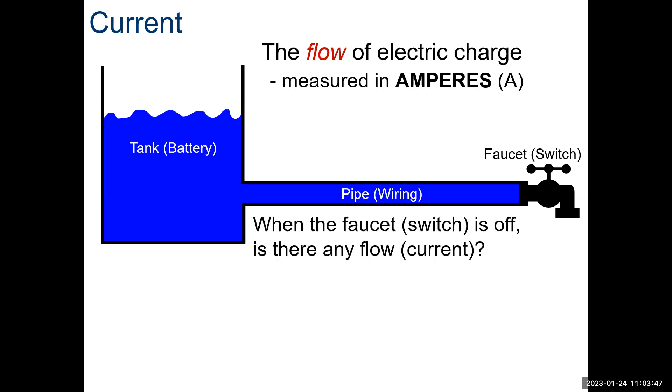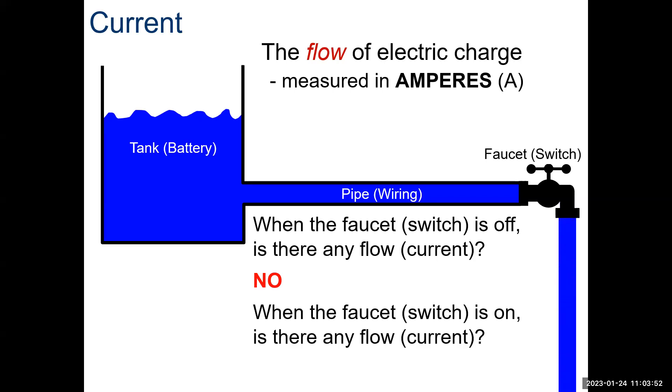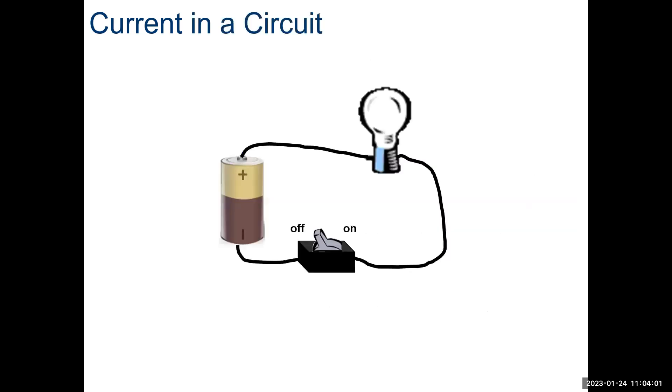When the faucet switches off, there is no flow. When the faucet switches on, there's flow. That's your current. Same thing. Think about those electrons moving. That's what's going on. It's not really water, obviously.